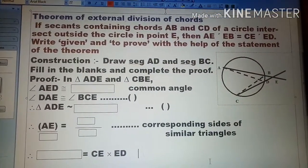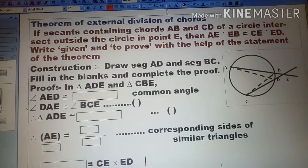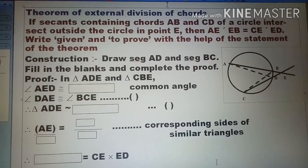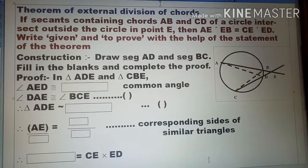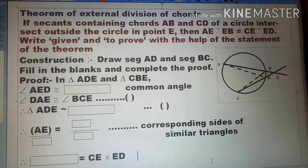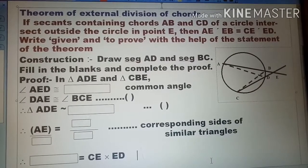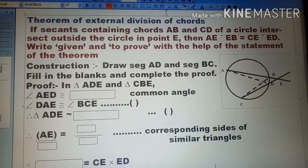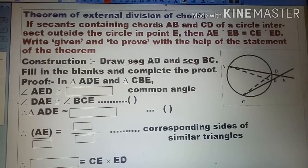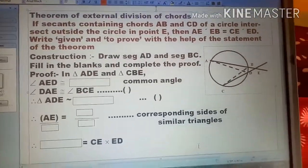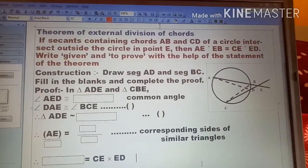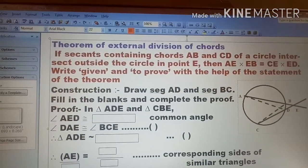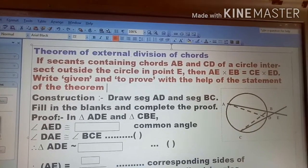Good morning friends, today we are going to learn the next theorem: theorem of external division of chords. It is a circle chapter theorem. So the theorem is, if secants containing chords AB and CD of a circle intersect outside the circle in point E, then AE into EB is equal to CE into ED.